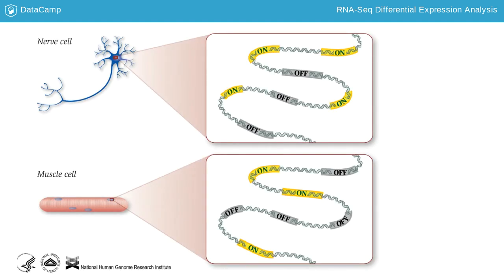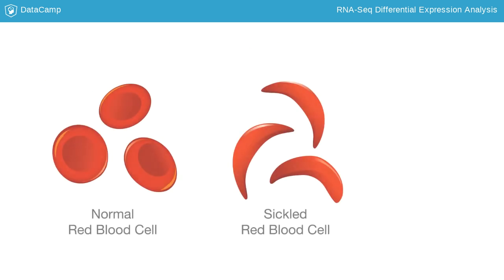Although all cells contain the same DNA sequence, muscle cells are different from nerve cells and other types of cells because of the different genes that are turned on in these cells and the different RNAs and proteins produced. Similarly, a disease-causing mutation can lead to differences in what genes are turned on, or expressed, and which genes are turned off. A mutation can affect the type and quantity of RNAs and proteins produced.